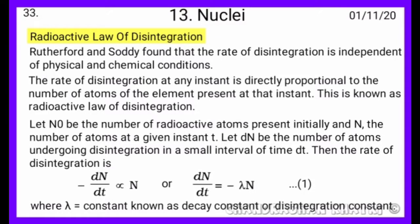Radioactive Law of Disintegration. Rutherford and Sodhi found that the rate of disintegration is independent of physical and chemical conditions. The rate of disintegration at any instant is directly proportional to the number of atoms of the element present at that instant. This is known as Radioactive Law of Disintegration.